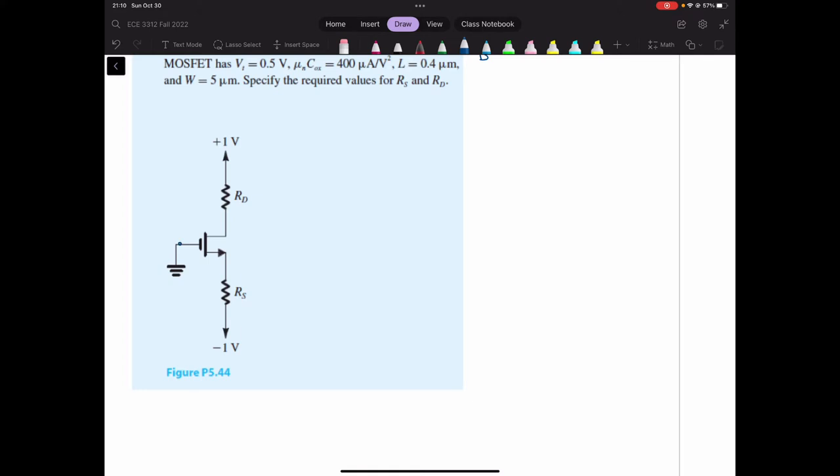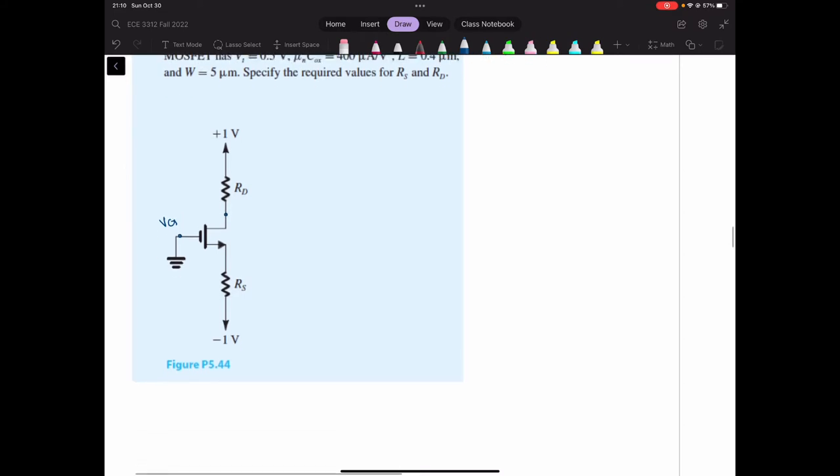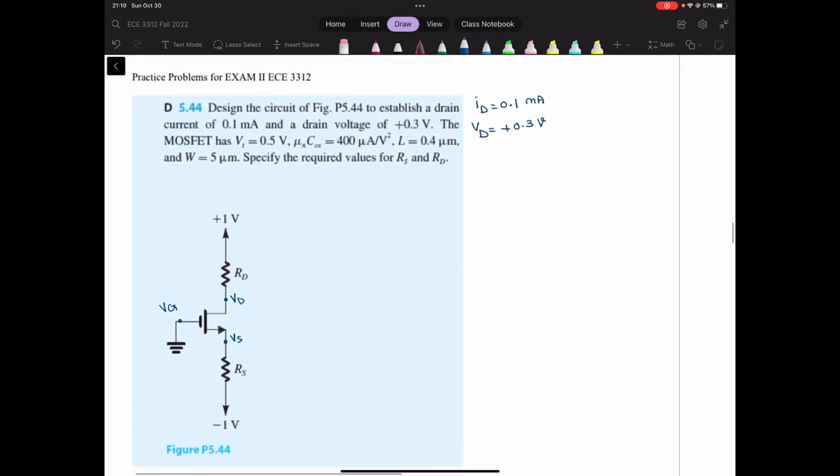We know that this is V gate. First of all, we are in the N channel transistor or NMOS, which is the N channel MOSFET. This is my VD and this is my VS. And VD is given as 0.3. So first thing, let's find out what region of operation we are in.